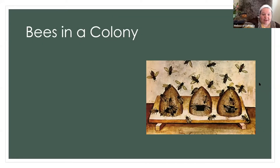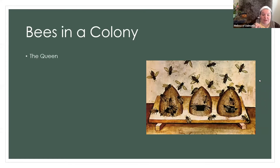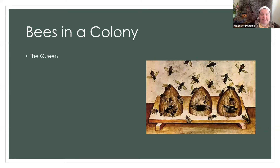So, bees in a colony. Within a colony we have three types of bees. We have the queen, which is always female — every colony only has one queen. When the bees outgrow their hive, have an aging queen, or lose their queen, they'll produce another queen bee to either swarm and take some of the population with her, or to replace the aging or missing queen. The queen does have a stinger and she'll use it to kill any rivals that are in the larval stage when she is in the process of becoming queen.